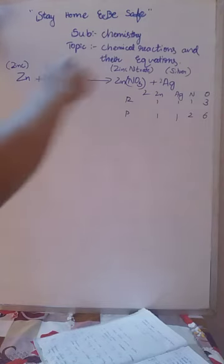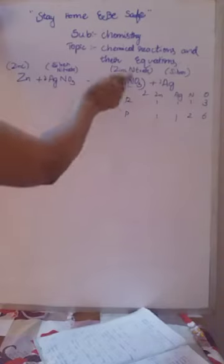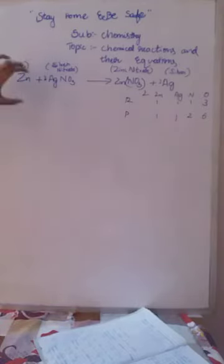Now everything is balanced. Check: one atom of zinc on each side, two atoms of silver on each side, two atoms of nitrogen on each side, and 2×3=6 atoms of oxygen on each side. Now it is fully balanced.